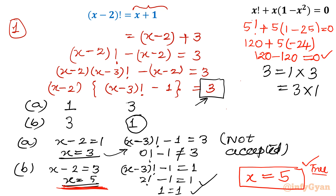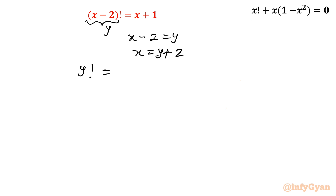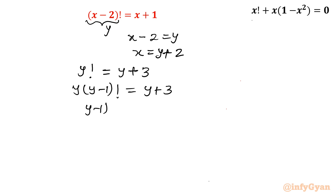Now let us solve by the conventional or traditional method. What we used to do is consider x minus 2 as a substitution variable y, so let x minus 2 equal y, which means x equals y plus 2. Substituting into the equation, y factorial equals x plus 1, which becomes y plus 3. Using the recursive formula again: y times (y minus 1) factorial equals y plus 3. Dividing by y: (y minus 1) factorial equals 1 plus 3 over y.